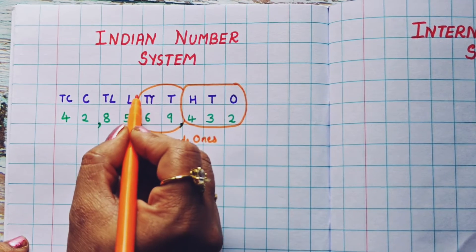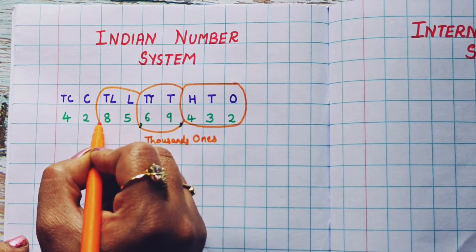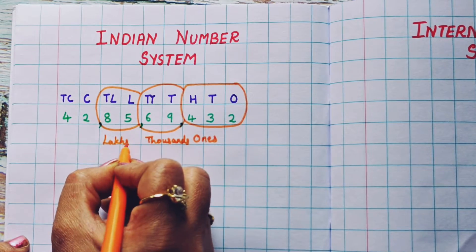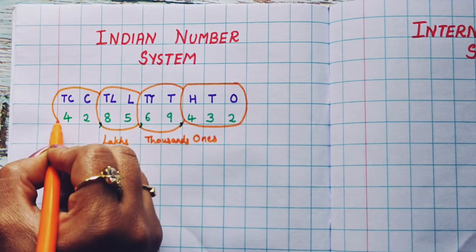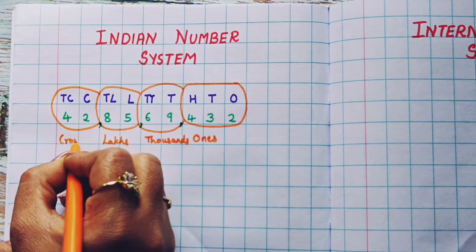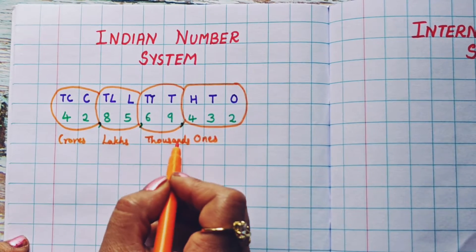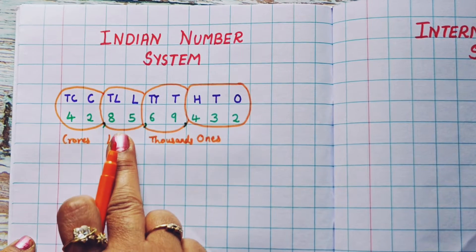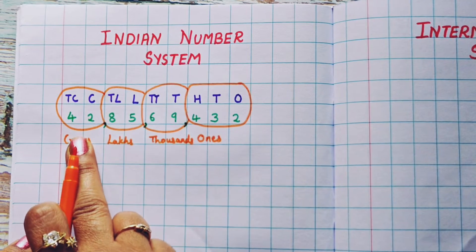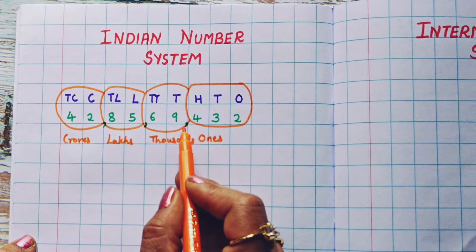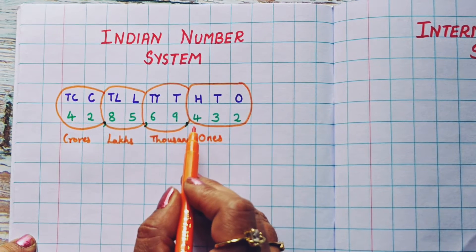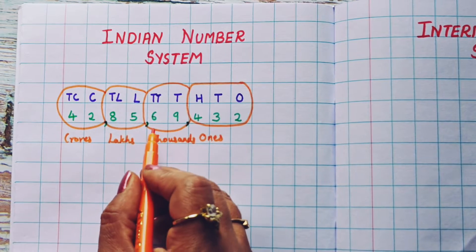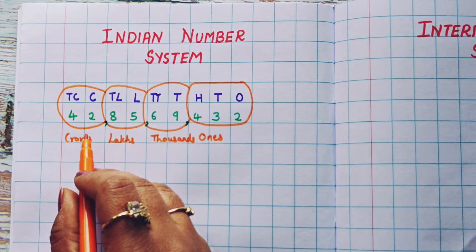Then this whole set between these two commas becomes the lakhs group, and this becomes the crores group. So we have: ones group, thousands group, lakhs group, and the crores group. The first comma we give after the hundreds place — after three digits — and thereafter, after every two digits, we give the comma.